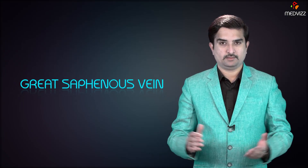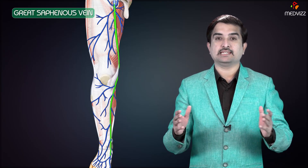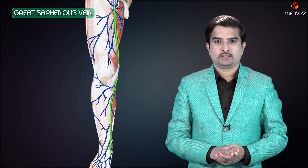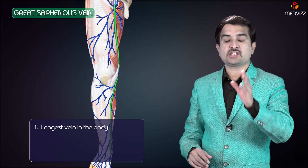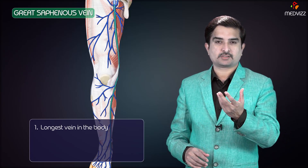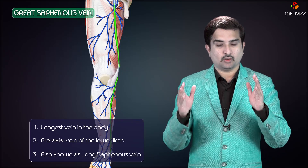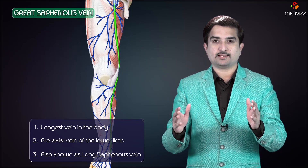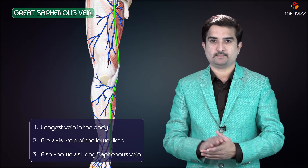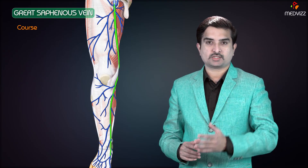The Great Saphenous Vein lies in the superficial fascia and is easily seen. It is the longest vein of the body and represents the pre-axial vein of the lower limb. It is also known as the Long Saphenous Vein. Now let us talk about the course of the vein.